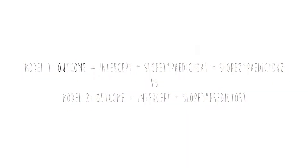We've got two models, and we compare them against each other. But first, let's go over some terminology. There are two types of models: a nested model and a non-nested model. If one model is nested within another, that means you can eliminate elements from one model to get the other. For example, if model 1 has predictor 1 and predictor 2, and model 2 only has predictor 1, deleting predictor 2 from model 1 gives you model 2 — so model 2 is nested within model 1. We call model 1 the full model and model 2 the reduced model.